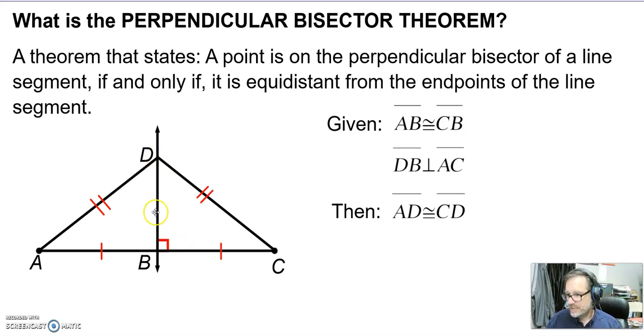And I don't care where D is. D can be down here, D can be way up here, D can be below the line, below segment AC, it doesn't matter. Once I have a perpendicular bisector and I go to the end of the segment, we know those segments are the same length that make up our triangle.